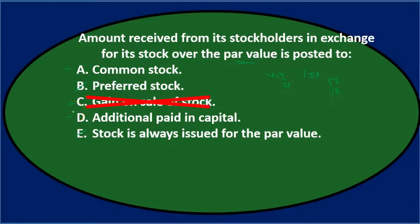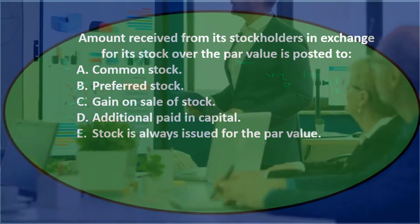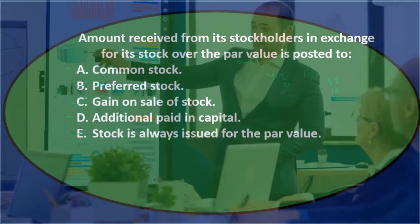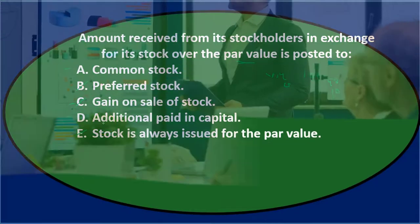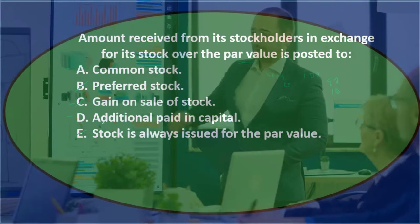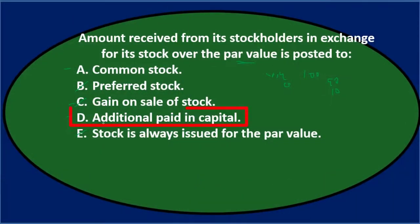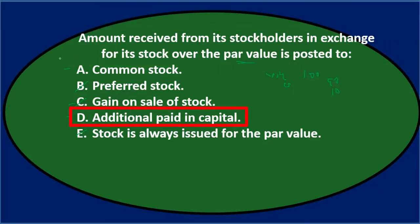It's not a gain because we're not selling something from the corporation's operations — we're selling an equity interest in the corporation, not an asset the corporation owns. So it's not a gain from selling something; it's a component of equity, and that's called additional paid-in capital. Final answer: amount received from stockholders in exchange for its stock over the par value is posted to D) additional paid-in capital.